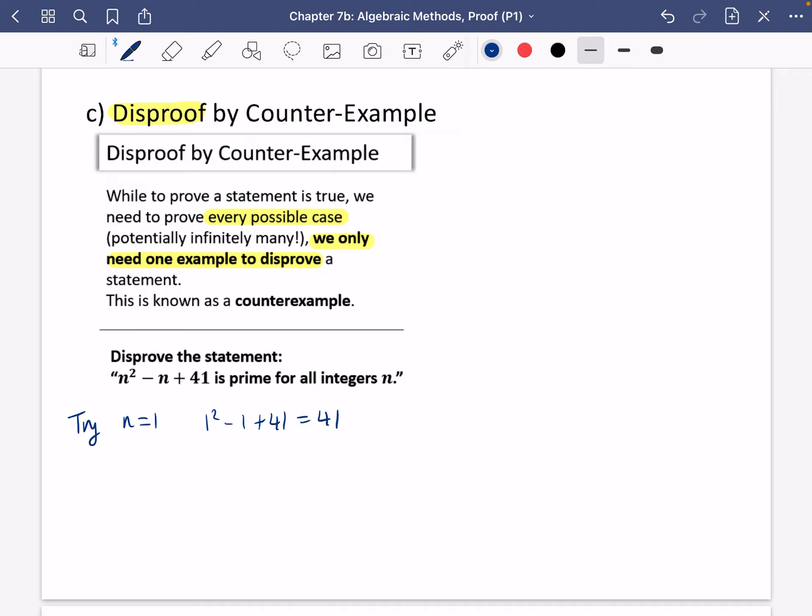And actually you'll find for a lot of different values here, it is going to be prime. So this one is very sneaky. Now if you can think carefully about a value that when you subtract it and you add 41 to it, you might get left over with just this. Well, this one is really sneaky.